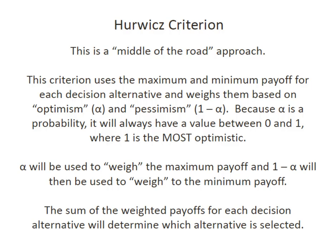It doesn't look at the maximum of maximums or the minimum of minimums. Instead, it uses the maximum and minimum payoff for each decision alternative. And then we're going to weigh them based on this idea of optimism and pessimism. We're going to allow alpha to represent optimism and pessimism will be 1 minus alpha.